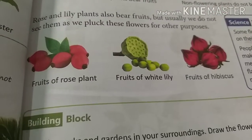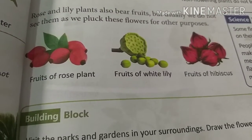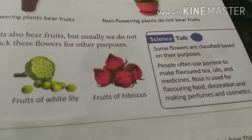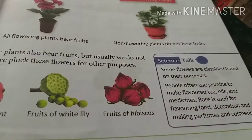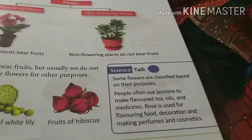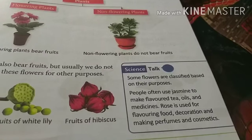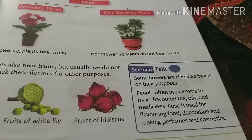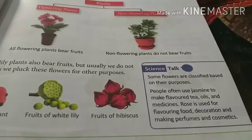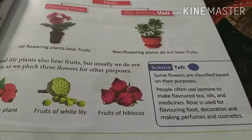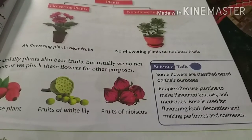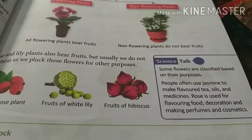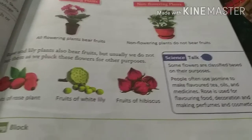This is a fruit of the rose plant. These are fruits of white lily and fruits of hibiscus. Some flowers are classified based on their purpose. People often use jasmine to make flavored tea. Flowers are also used for decoration, but some flowers are used for flavored tea, oils, and medicines. Rose is used for flavoring food, decoration, and making perfumes and cosmetics.